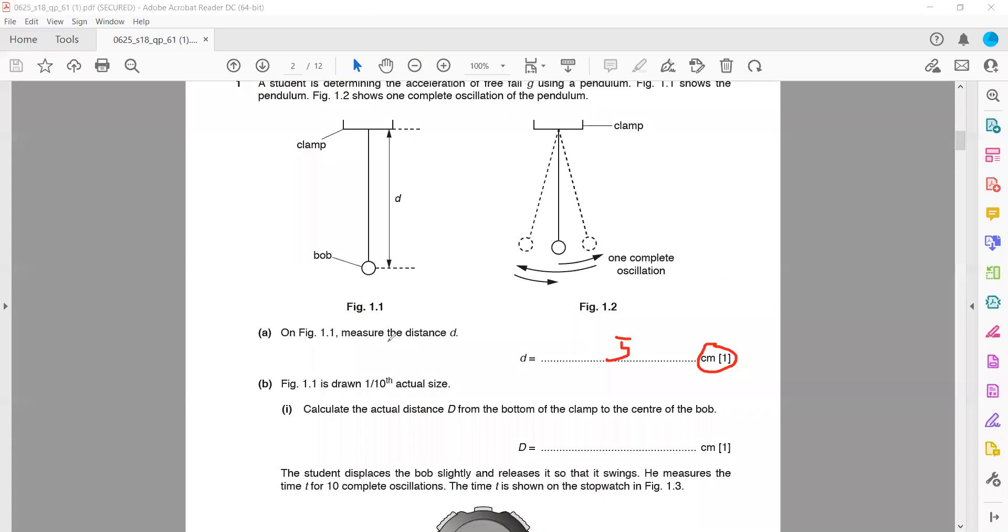Figure 1.1 is drawn one-tenth of actual size, meaning the figure size equals one-tenth of the actual size. We need the actual size. If the figure size is 5 centimeters, what will the actual size be?